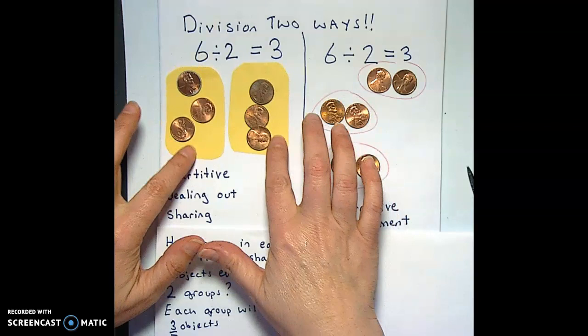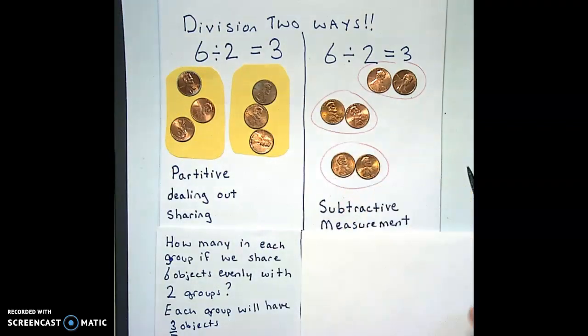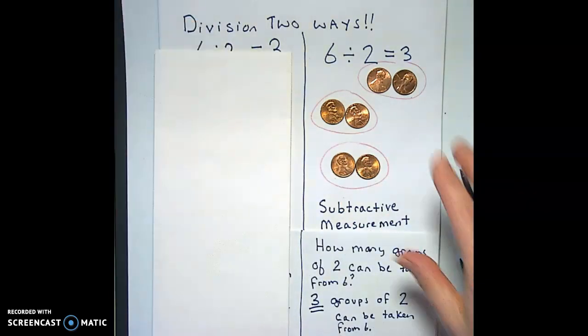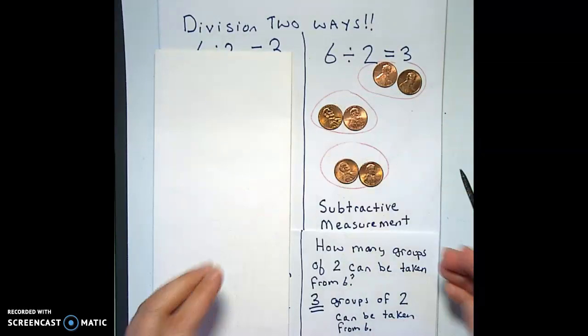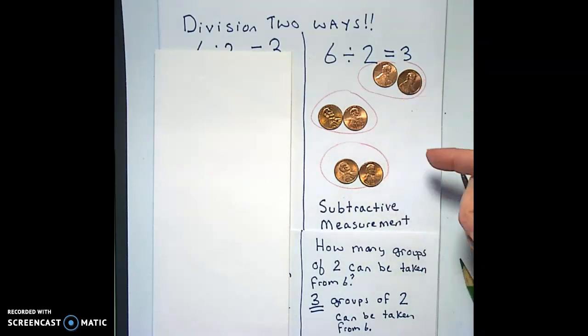So we ended up with our answer three being the number of things in each group, whereas with subtractive measurement it was we started with six things and we wanted to know how many groups of two we could take away from six. So the answer here, the three, is in the number of groups—three groups of two can be taken from six.